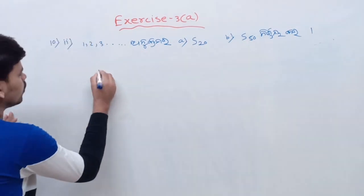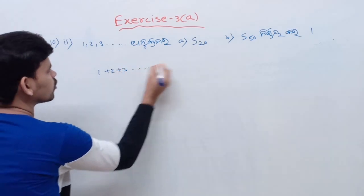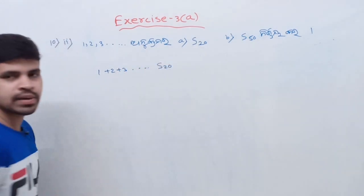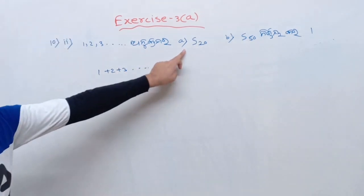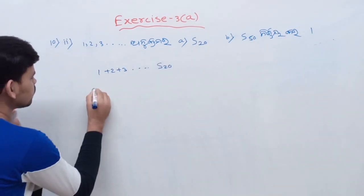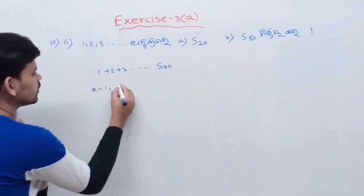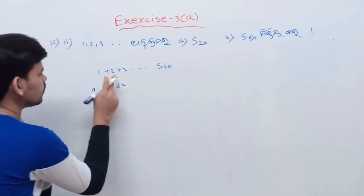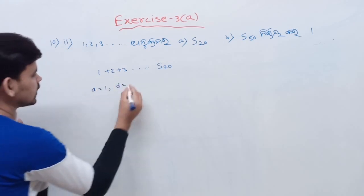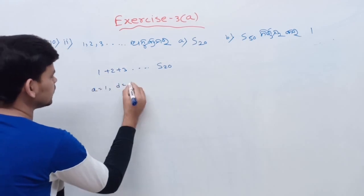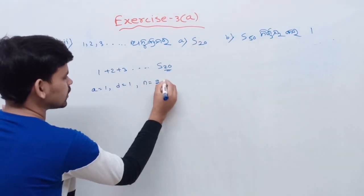Now the answer is 1 plus 2 plus 3. I am going to do that S20. So S20, first of all A is 1. First of all A is 1. So D is minus, so 2 minus 1 is 1. So N is 20.